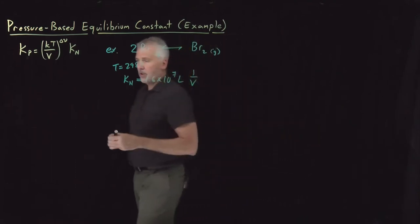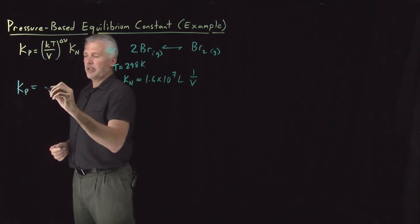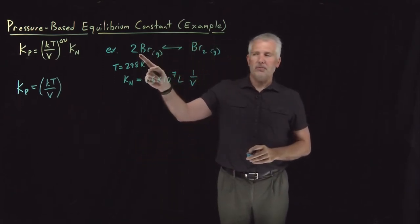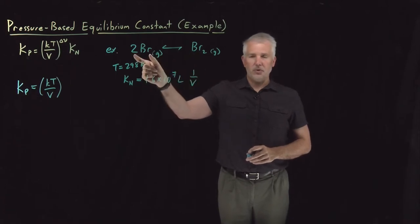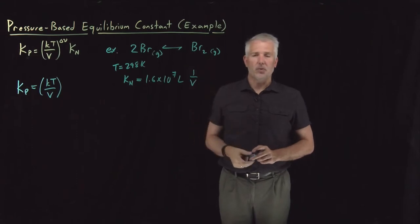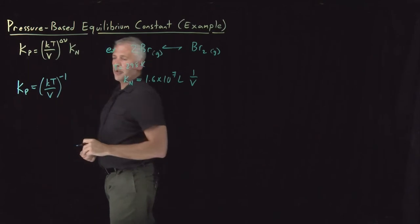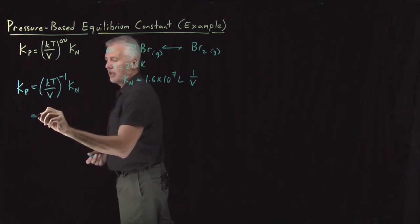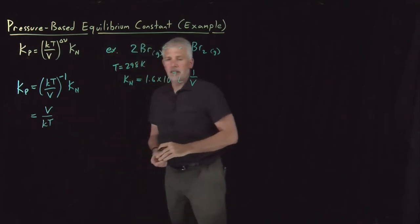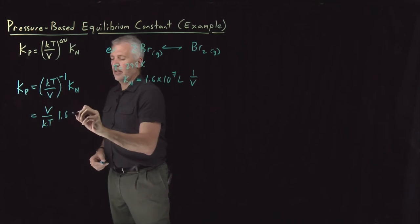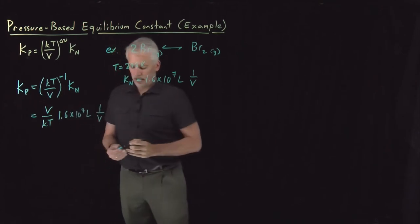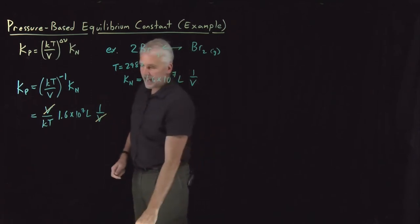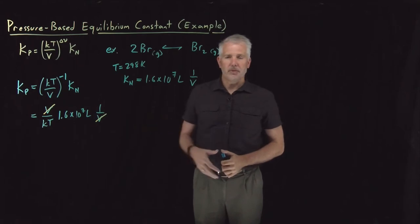To find Kp, this expression tells us that's going to be Kn over V raised to the difference in stoichiometric coefficients. When two atoms of bromine become one molecule of Br2, we've turned two gas species into one gas species, losing one species in the gas phase. So the stoichiometric coefficient difference is negative one. Kp equals Kn times V over kT — but since Kn is 1.6 times 10 to the seventh liters times one over V, the volume in the conversion ratio conveniently cancels the volume in Kn.